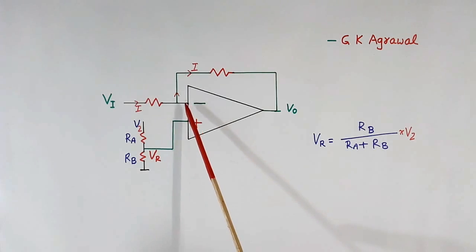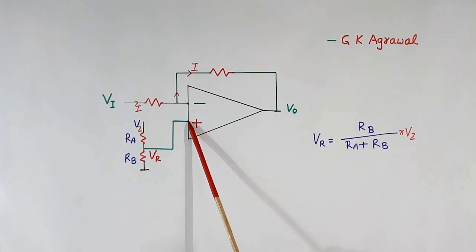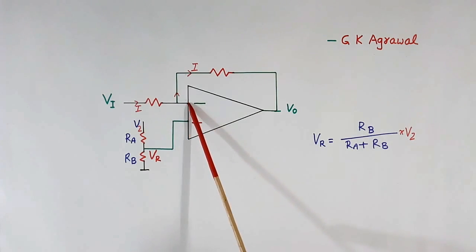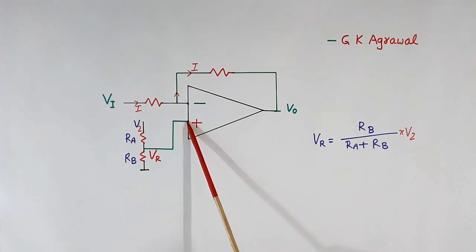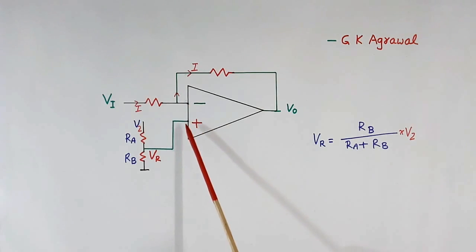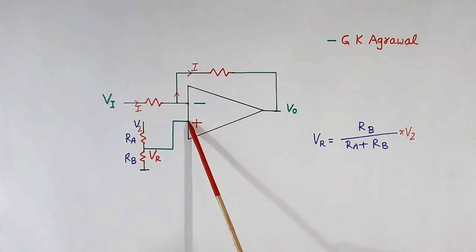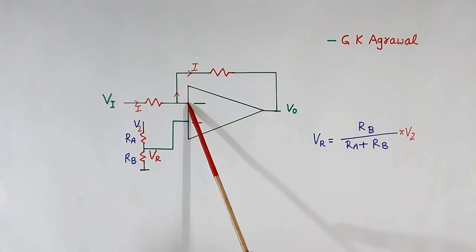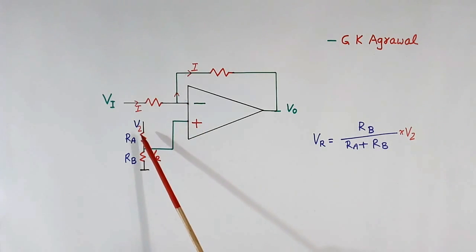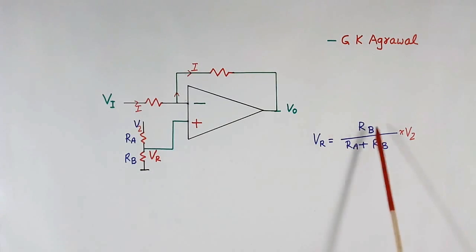First rule is: the voltage of the negative input is always equal to the voltage of the positive input. If the positive input is 2 volts, voltage at the negative terminal will also be 2 volts. If this is 5 volts, voltage at the negative terminal will also be 5 volts. If this is VR, voltage at the negative terminal will also become VR. So first we calculate the voltage at the positive input, and then the negative terminal voltage equals that same voltage. If there is a voltage divider, voltage VR can be calculated using that equation.